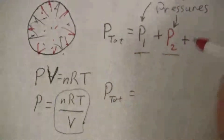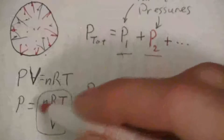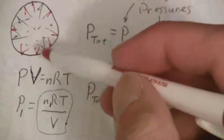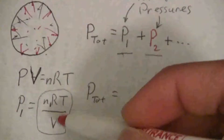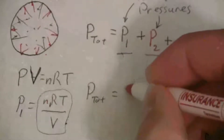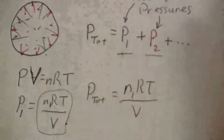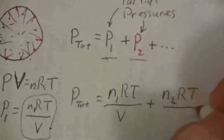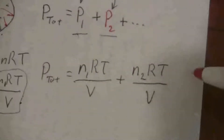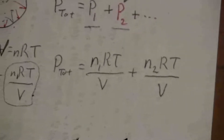So the total pressure is equal to pressure one, which is N1 times R times T over V, plus N2 RT over V for the second molecule. The temperature in this mixture is going to be the same for both gases, and the volume is the same since they're both in the same container — only the moles would be different. If there were three gases in the mixture, we could add N3 RT over V, adding another term for every new gas in the mixture.